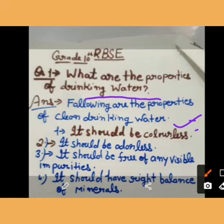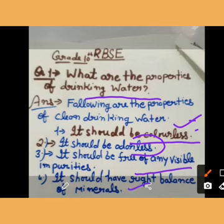First point: it should be colorless. It should be odorless. It should be free of any visible impurity. It should have the right balance of minerals. This is the English version of the answer to: what are the properties of drinking water? I will speak in both Hindi and English to serve all students.